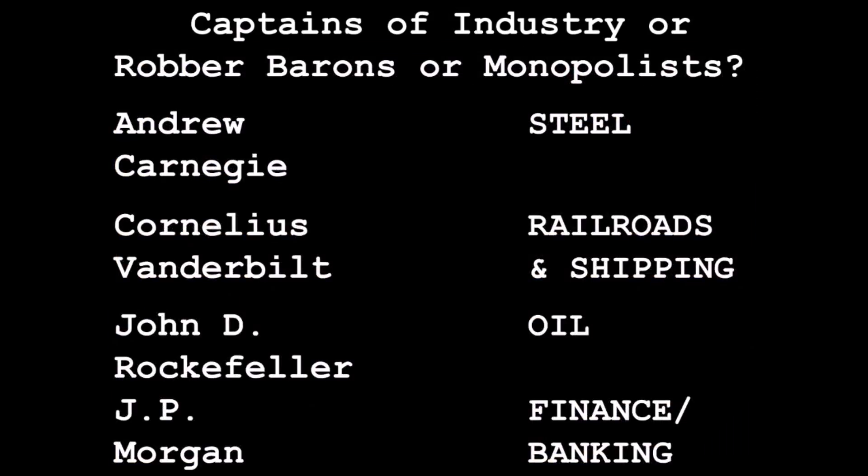Here's a quick summary. Robber barons or captains of industry? Andrew Carnegie was steel. Cornelius Vanderbilt was roads and shipping. John D. Rockefeller was oil. And J.P. Morgan was finance and banking.